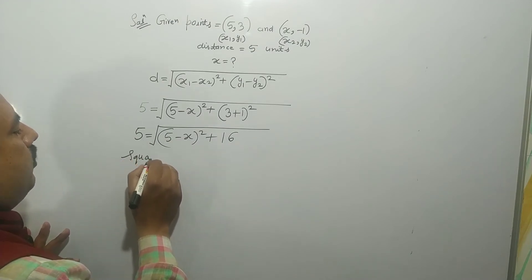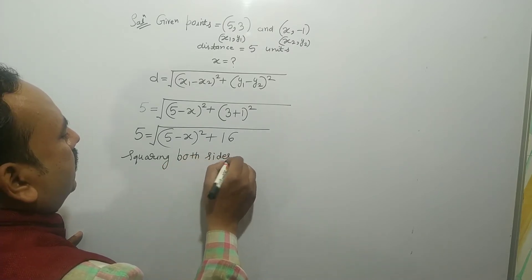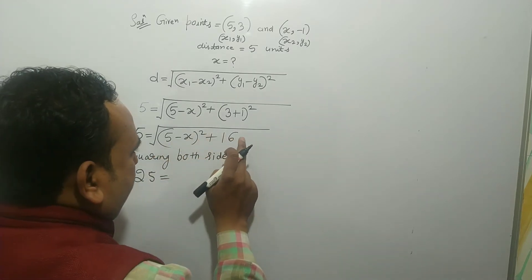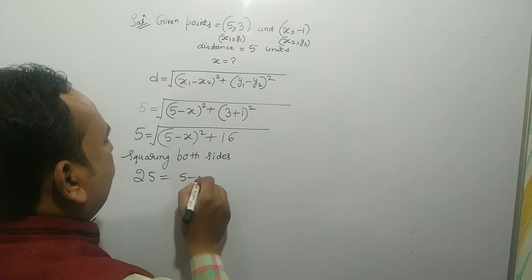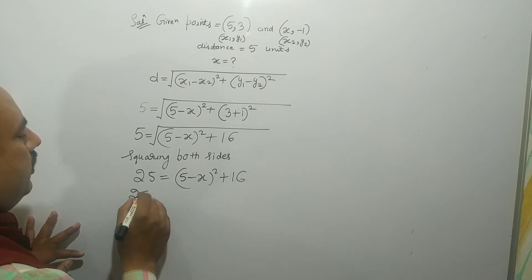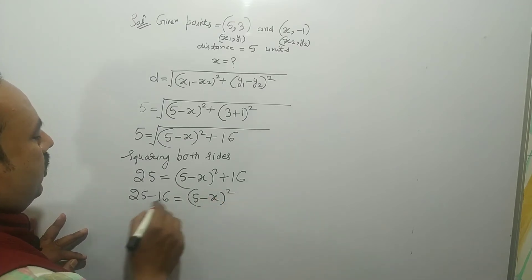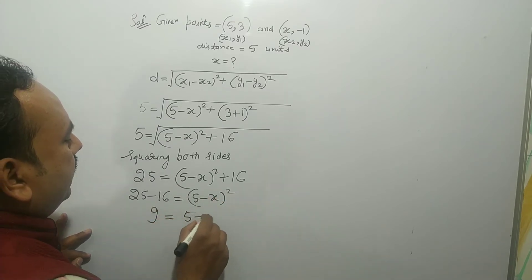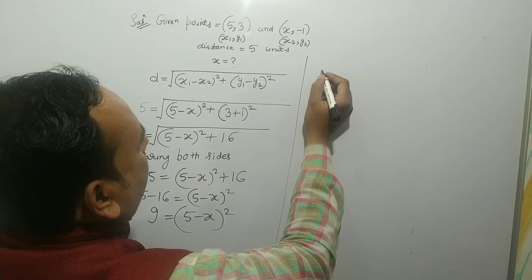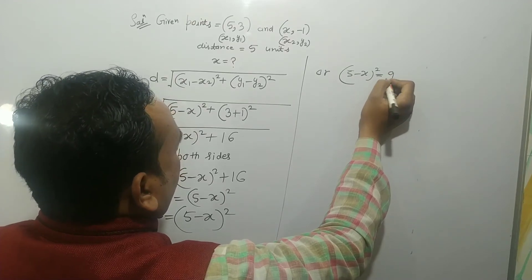Squaring both sides to remove the square root: 5² = (5 − x)² + 16, so 25 = (5 − x)² + 16. By transposition, 25 − 16 = (5 − x)², which gives 9 = (5 − x)², or (5 − x)² = 9.